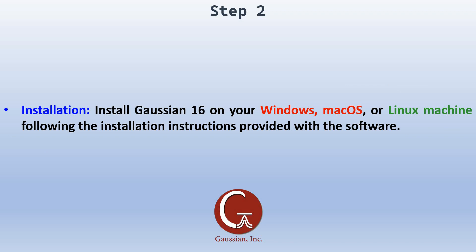Step 2: Installation. Install Gaussian 16 on your Windows, Mac OS, or Linux machine following the installation instructions provided with the software. For Windows and Mac OS, installation is straightforward. For Linux, if you have experience you can install it yourself, otherwise get a Linux expert to help.